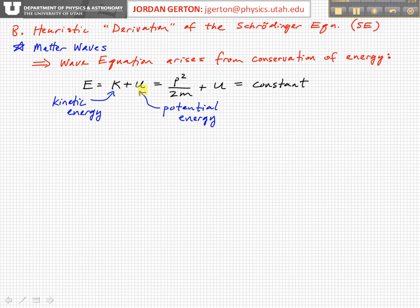For a non-relativistic particle, we can write the kinetic energy as p² over 2m, plus the potential energy. If the potential energy belongs to a conservative force, then the particle doesn't lose or gain energy, and the total energy is equal to a constant.